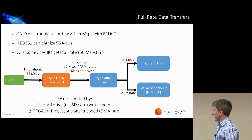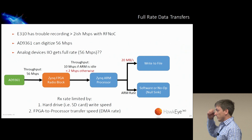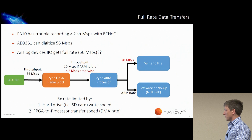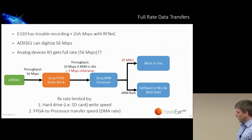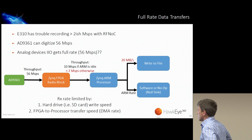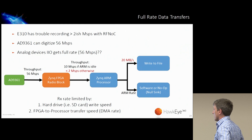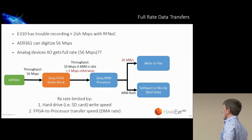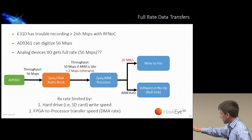Second use case: full-rate data captures with the E310. People on the mailing list sometimes have trouble recording greater than a few mega samples per second. The AD9361 digitizes 56 mega samples per second. The bottleneck is the PL-to-PS (programmable logic to processor) interface. The AD9361 gets 56 mega samples into the FPGA fine, but maxes out at 10 mega samples going to the ARM when idle — otherwise about 2. On the ARM side, writing to an SD card gets about 20 megabytes per second, while writing to a RAM disk is essentially unlimited.